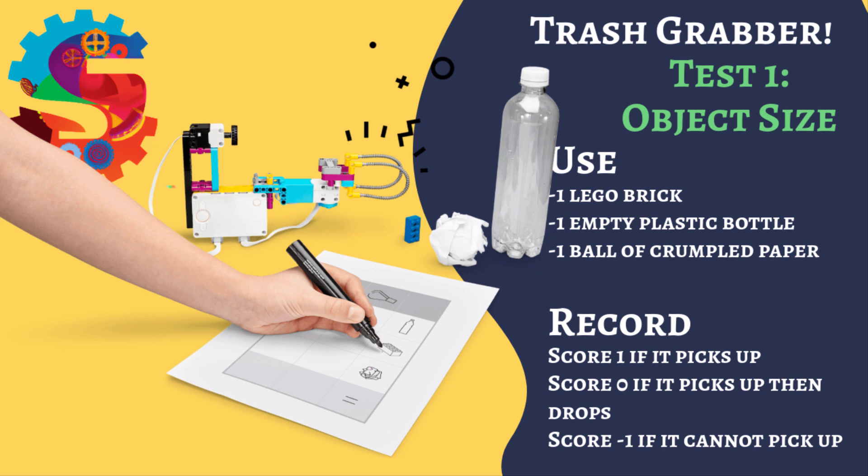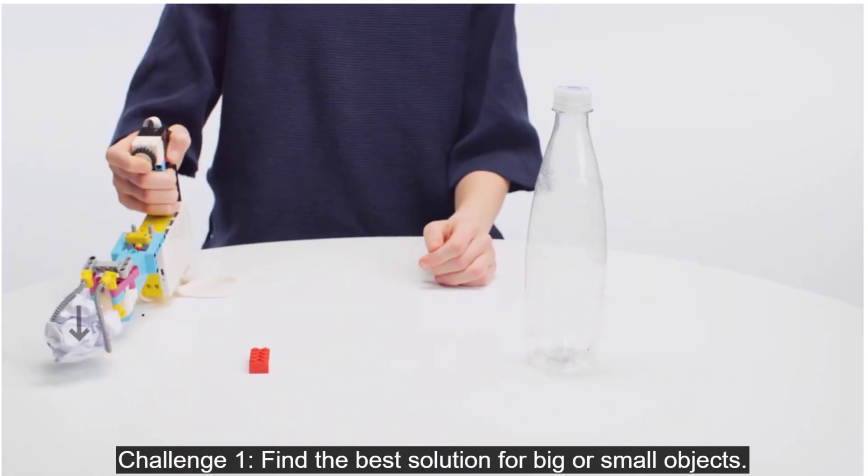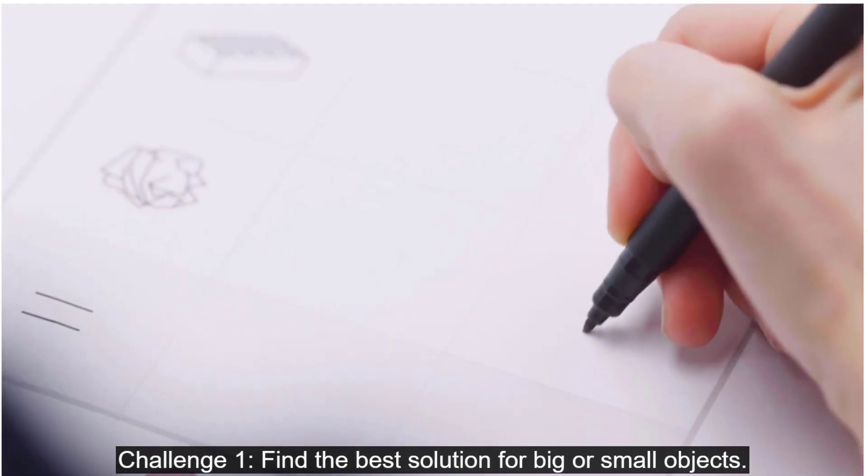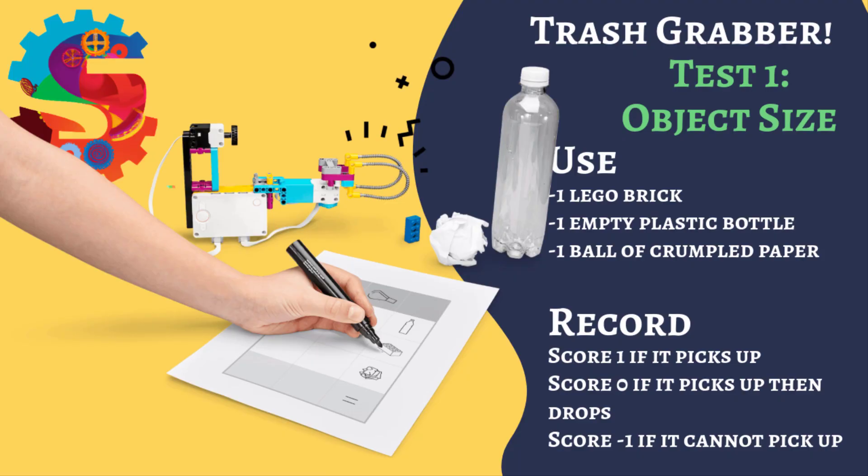Use each grabber and try to pick up each one. Give it a score of one point if it can grab, lift, and move the object. Give the grabber a score of zero if it grabs the object but then drops it when you're trying to move it. We're going to give it a negative one point if it doesn't grab or lift the object. If you can't even pick it up with the grabber, that's going to score a negative one. Once you've done this challenge, determine which grabber is better for picking up large objects and which one is better for picking up small objects, or is there an overall better grabber?